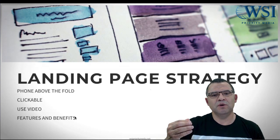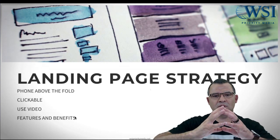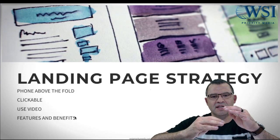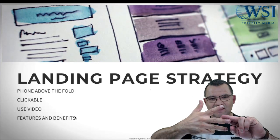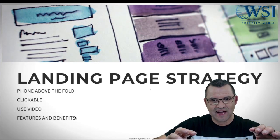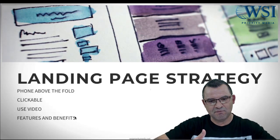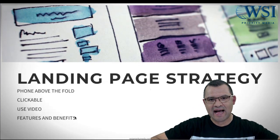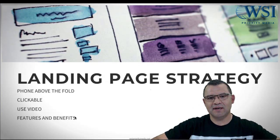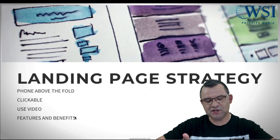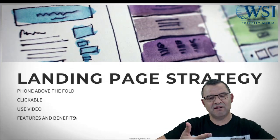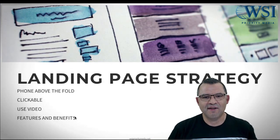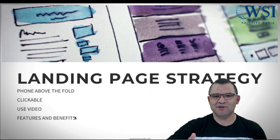So as you write your landing page, list it out: feature, benefit, call to action — more features, more benefits, call to action — then social proof, features, benefits, and then a final call to action. That's the formula, folks.